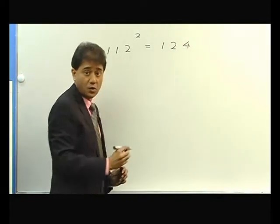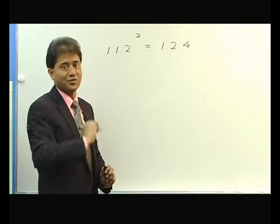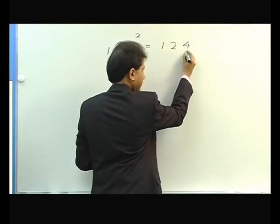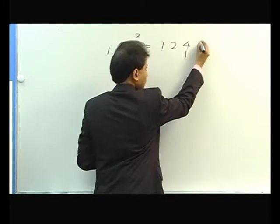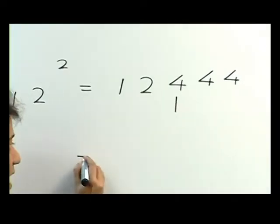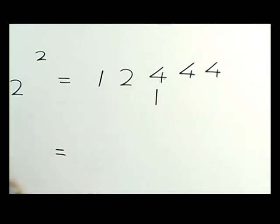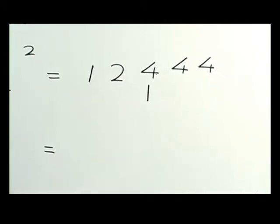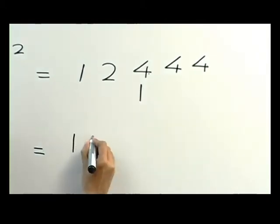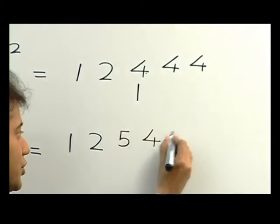And now 12 square is 144. There are 3 digits, so you write 1 below 44 here. And now you add this 4 and 1. 4 plus 1 gives you a 5. So the answer becomes 12544.